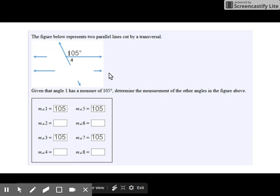Next, let's look at angle four versus angle one. They are a linear pair. They are on a straight line. Linear pairs add to 180 degrees.